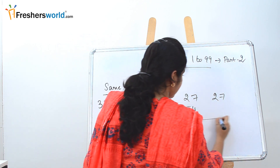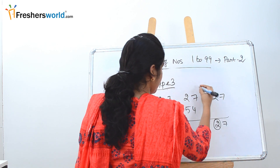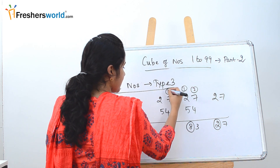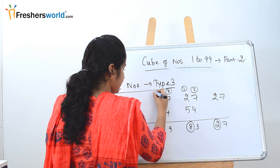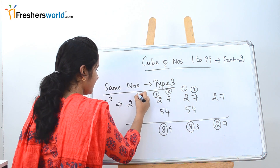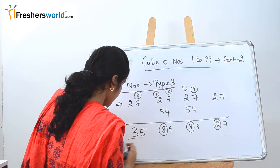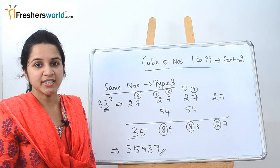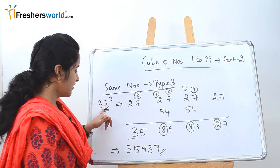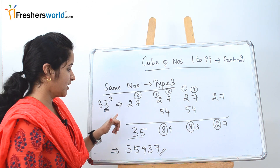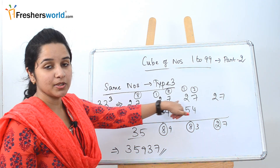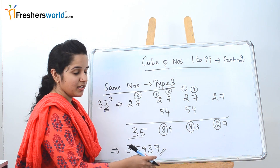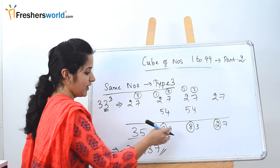Now we add the columns. Starting from the right: 27 — carry 2. 7 plus 2 is 9, then 13, write 3 carry 1. Next column: 8 carried over, 8 plus 7 is 15, then 19, write 8 carry 1. Next: 8 carried over gives 35. So 33 cube is 35,937.